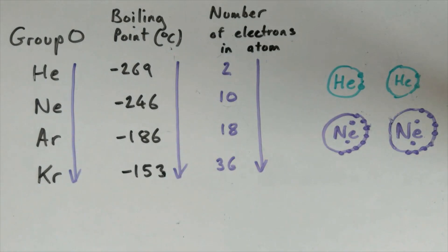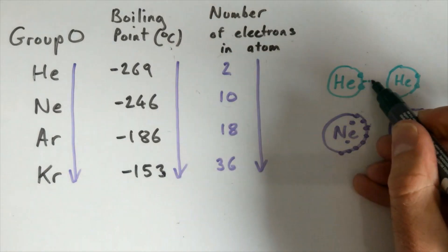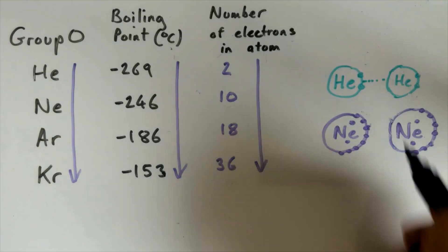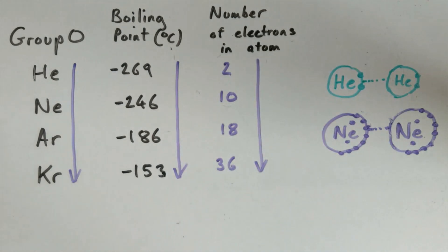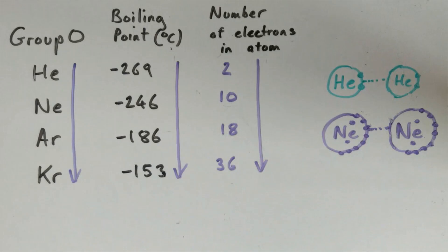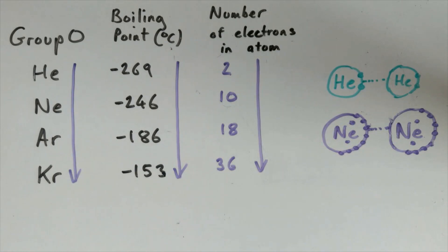How does this explain the increase in boiling point? We need to look at the London dispersion forces — these are caused by movement of electrons. The more electrons present in an atom, the stronger the London dispersion forces will be between atoms. Because neon has 10 electrons and helium has only 2, the London dispersion forces will be stronger between neon atoms. Therefore more energy will be required to overcome these London dispersion forces to melt and boil neon compared to helium. In summary, the more electrons present in an atom, the stronger the London dispersion forces, and therefore the higher the melting and boiling point.